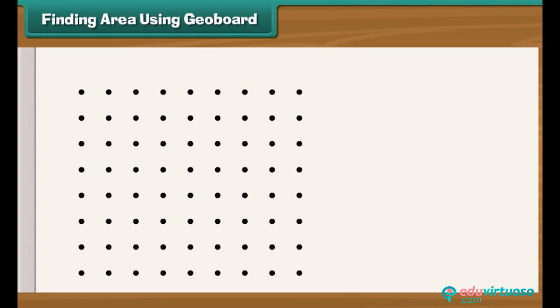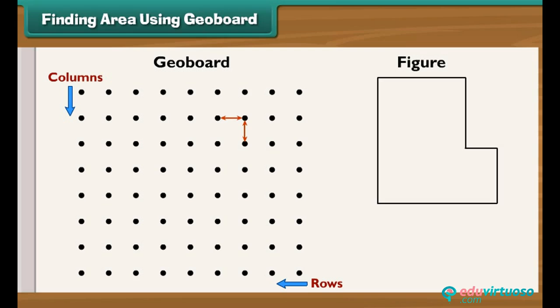Finding area using a geoboard. A geoboard is created by placing dots in rows and columns, where the distance between any two adjacent dots is the same. Let us learn to calculate the area of a given figure using a geoboard.